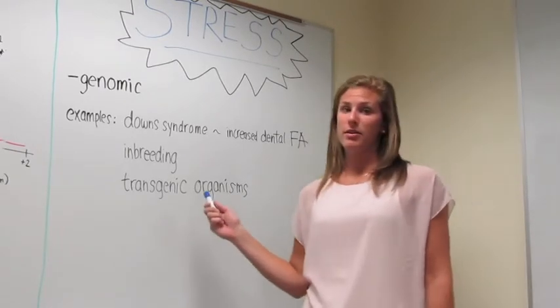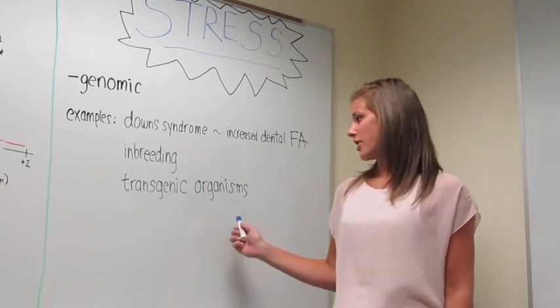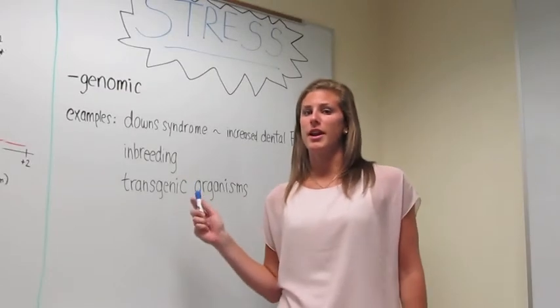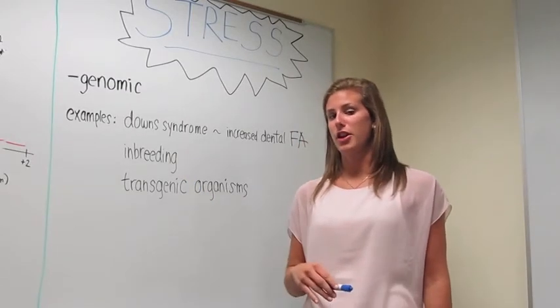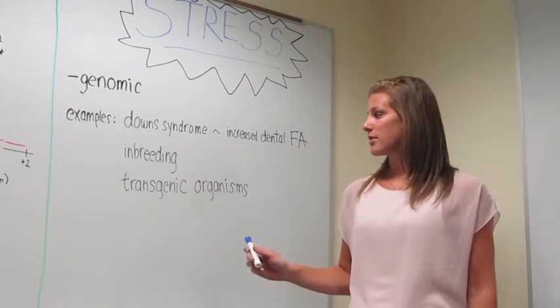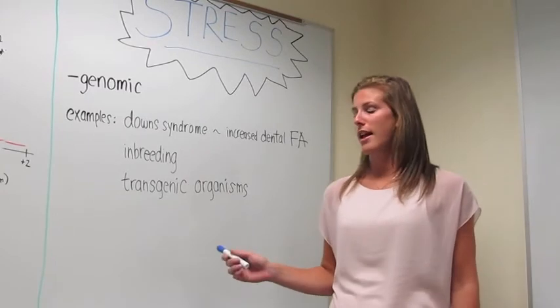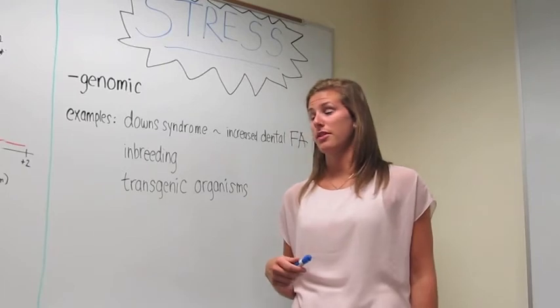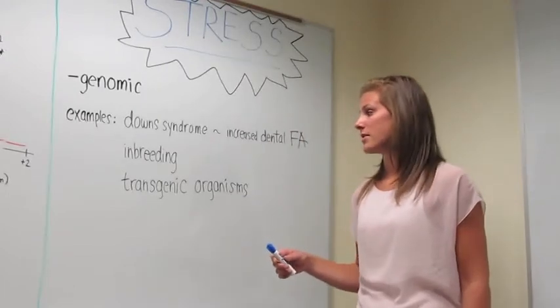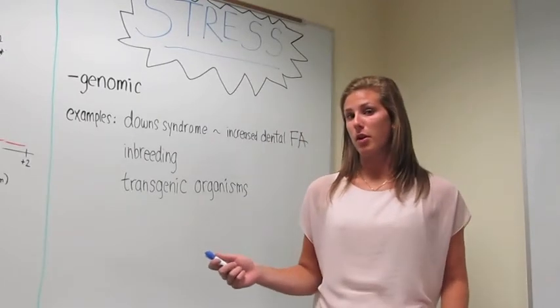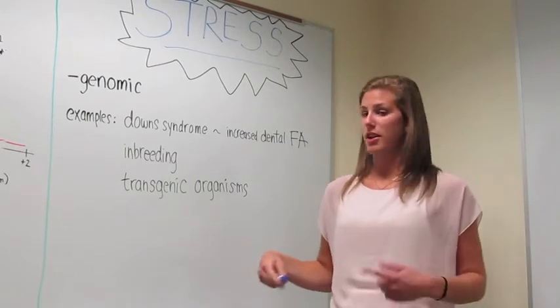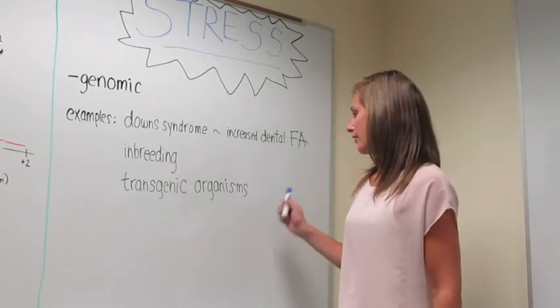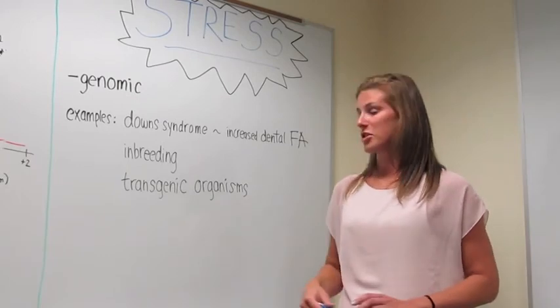Inbreeding can also cause increased FA, as well as transgenic organisms. Transgenic organisms are those that have DNA added into their genome. Parsons notes in his paper that the extra DNA added into the genome of transgenic organisms is essentially more work for the cells to transcribe all of the DNA, resulting in increased FA of multiple systems.